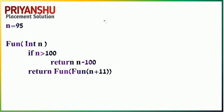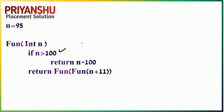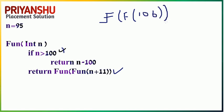The first question: n equals 95, and the function f(n). If n is greater than 100, then return n minus 10; else return f(f(n+11)). Since 95 is not greater than 100, the condition is false. So it returns f(f(n+11)), and n+11 means 106. We work on the inner function first.